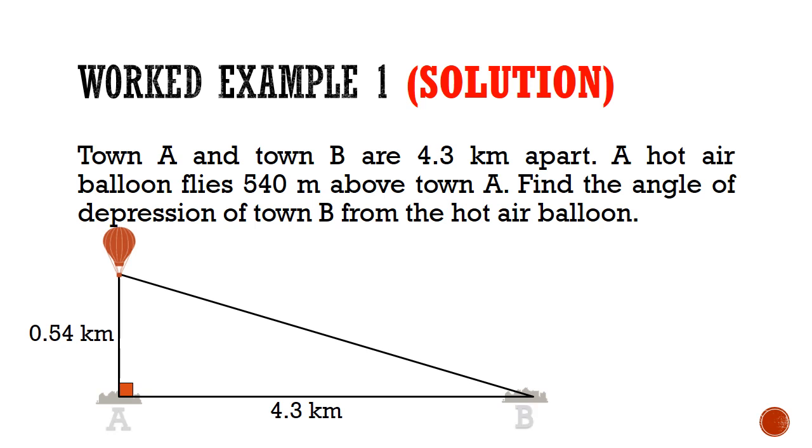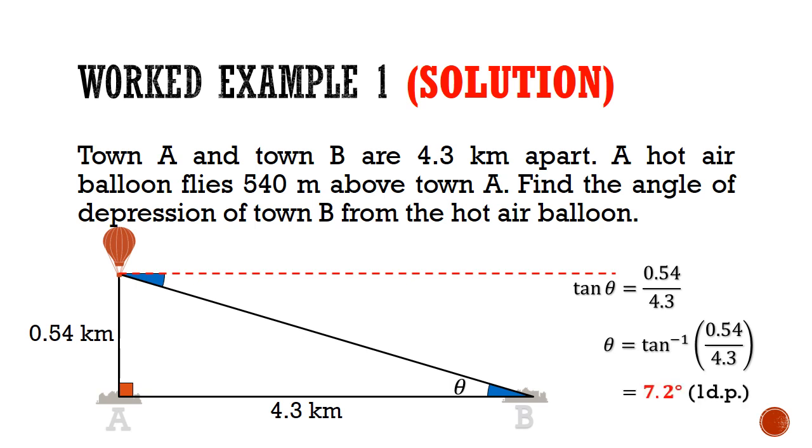We can first label the angle of depression of Town B from the balloon, and this is equal to the angle of elevation of the balloon from Town B. I'm going to call this theta. And using that as our reference angle, tangent theta is equal to 0.54 divided by 4.3. I can undo the tangent function with the inverse tangent function, and this will give me an angle of 7.2 degrees. Remember to conclude your answer with a statement. The angle of depression is 7.2 degrees.